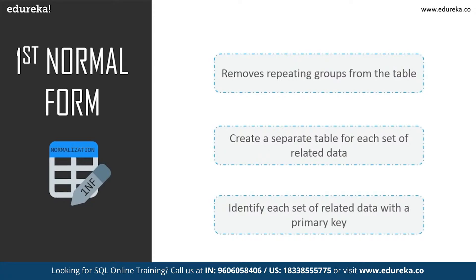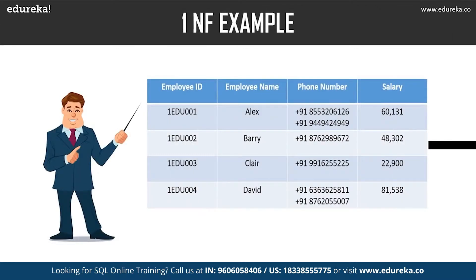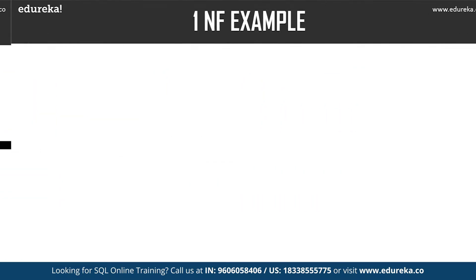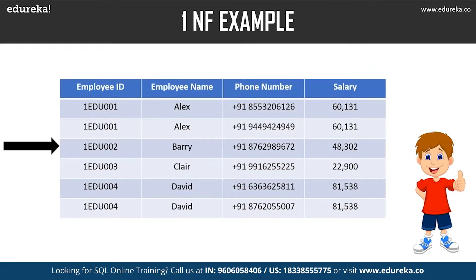If a table contains composite or multi-valued attributes, it violates the first normal form. The following operations are performed in first normal form: it removes repeating groups from the table, creates a separate table for each set of related data, and identifies each set of related data with a primary key. In the employee table, we have employee ID, employee name, phone number, and salary as columns. The phone number column has two values, which violates 1NF. After applying first normal form, each row is distinct with no cell having multiple values — the table achieves atomicity.